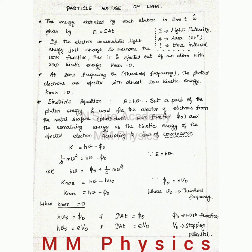According to Einstein's equation, a part of the photon energy is used for the ejection of electrons from the metal surface, that is photoelectric work function φ₀, and the remaining energy as the kinetic energy of the ejected electron.